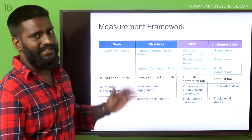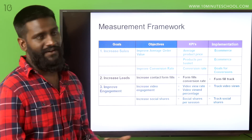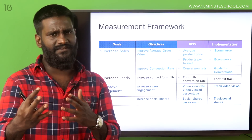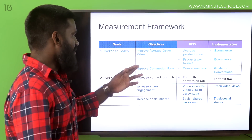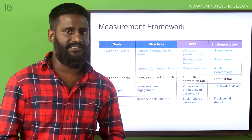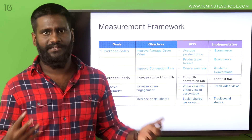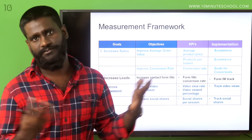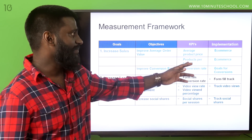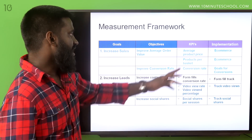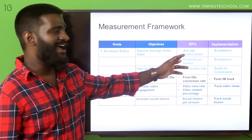One way is you can increase sales by improving average order value — just Google it, it's simple. And then improve conversion rate — how many people came, how many people bought. So what are my KPIs? Average product price, so I can improve the average order value by selling high-value products.